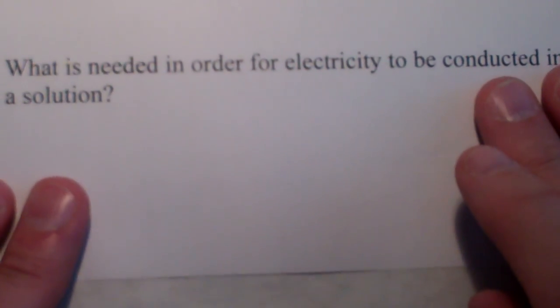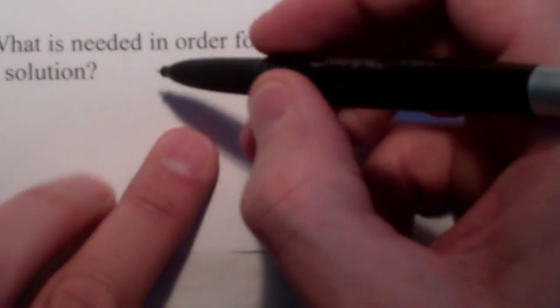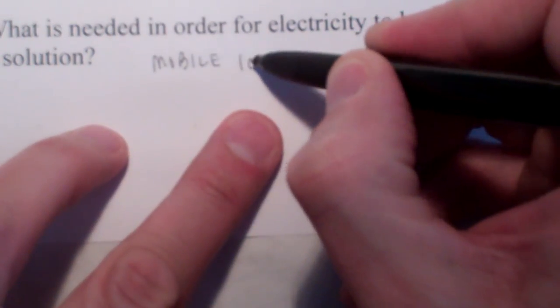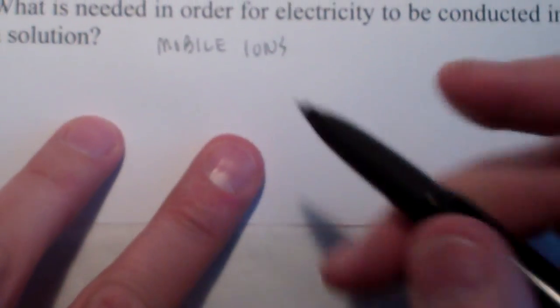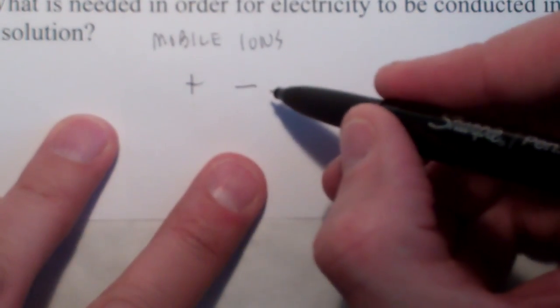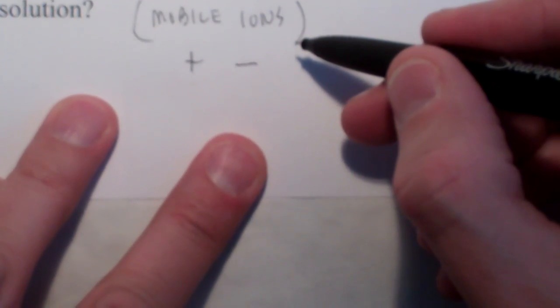So, we need to answer this question. What is needed in order for electricity to be conducted in the solution? And the answer is mobile ions. We have to have positive and negative ions that can move back and forth between the electrodes to conduct the electricity. So, if mobile ions are present, we will have what's called an electrolyte. So, that was one of your vocabulary terms from an earlier assignment.